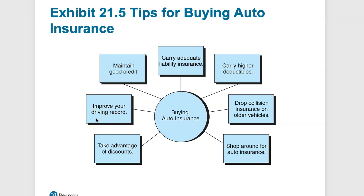Improve your driving record — try to never have an accident, drive very cautiously, and minimize your driving. Your driving record is one of the biggest contributors to high insurance rates. Maintain good credit — keep your FICO scores and credit scores high, pay off credit cards on time, and don't overextend yourself by taking on too much credit. Being a good credit score holder will result in lower insurance premiums, and it's something you can easily control with a little financial discipline.